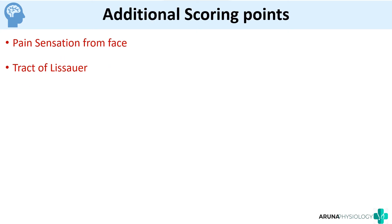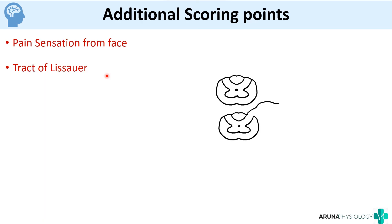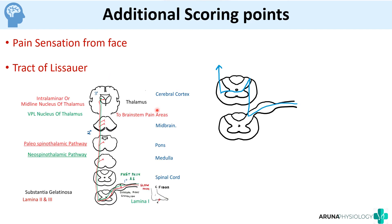For additional scoring points, you can mention pain sensation from the face. When we talk about the spinothalamic pathway, we are discussing sensation from other parts of the body — pain from the face is carried by the trigeminal nerve. There is also something called the tract of Lissauer: sometimes instead of crossing over at the same spinal segment, the spinothalamic fibers may ascend or descend one or two segments before crossing over to the next spinal segment. That bundle forms the tract of Lissauer.